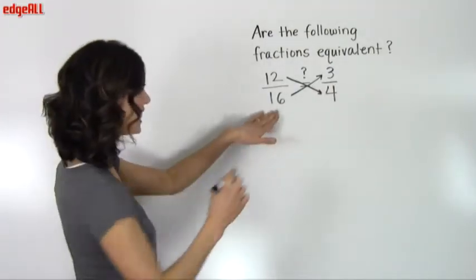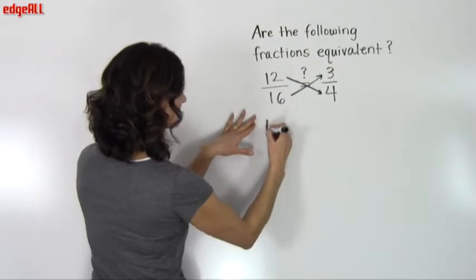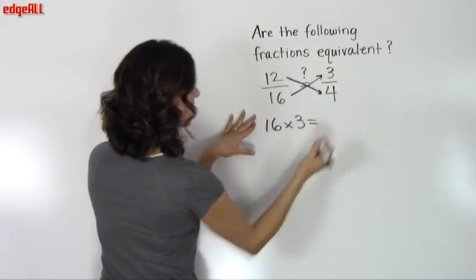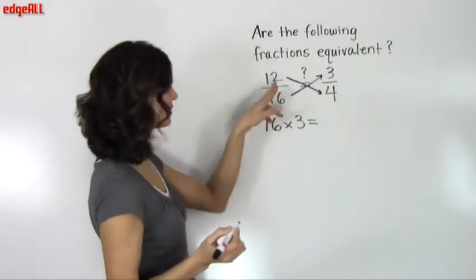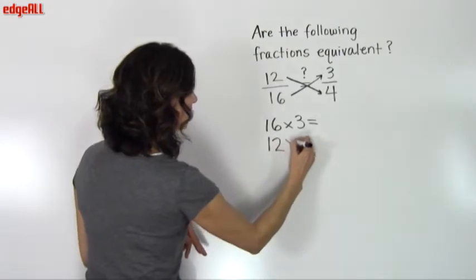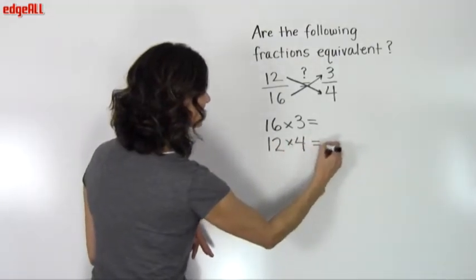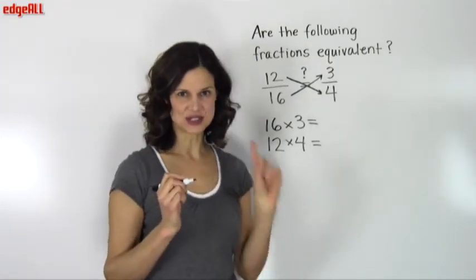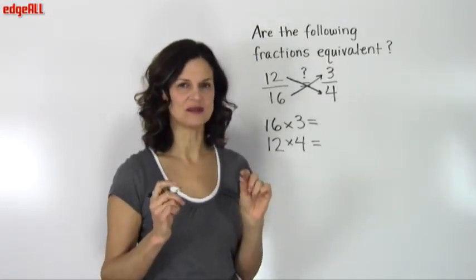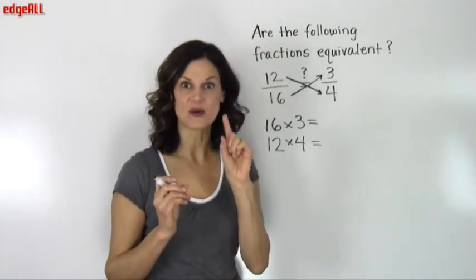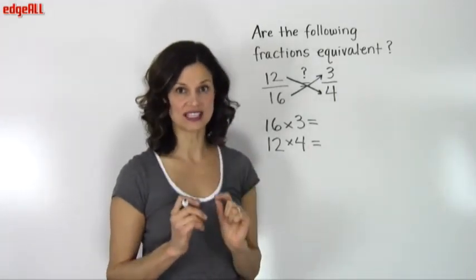We start out then by multiplying 16 times 3, and we're going to find the answer to that. And then we are going to multiply 12 times 4 and find the answer to that. Now if the two answers to those two multiplication problems are equal to each other, then that tells us that we do have equivalent fractions.